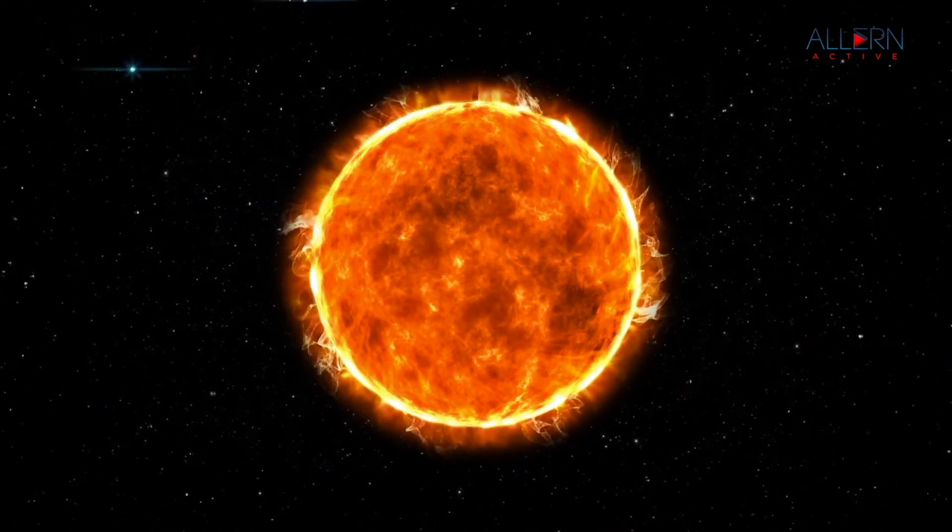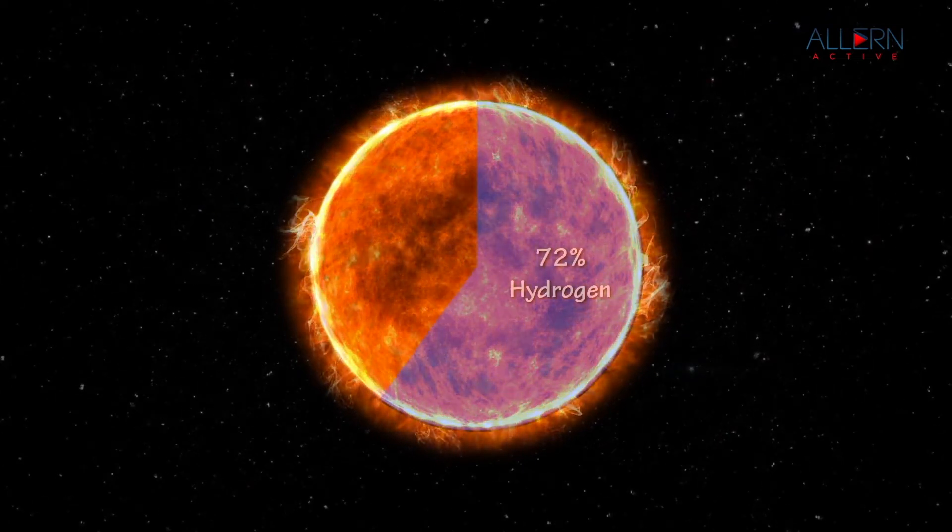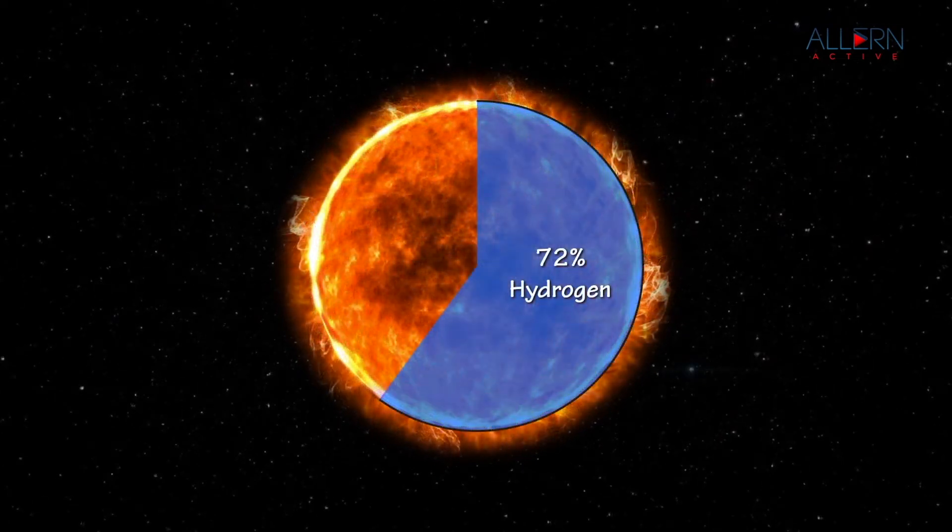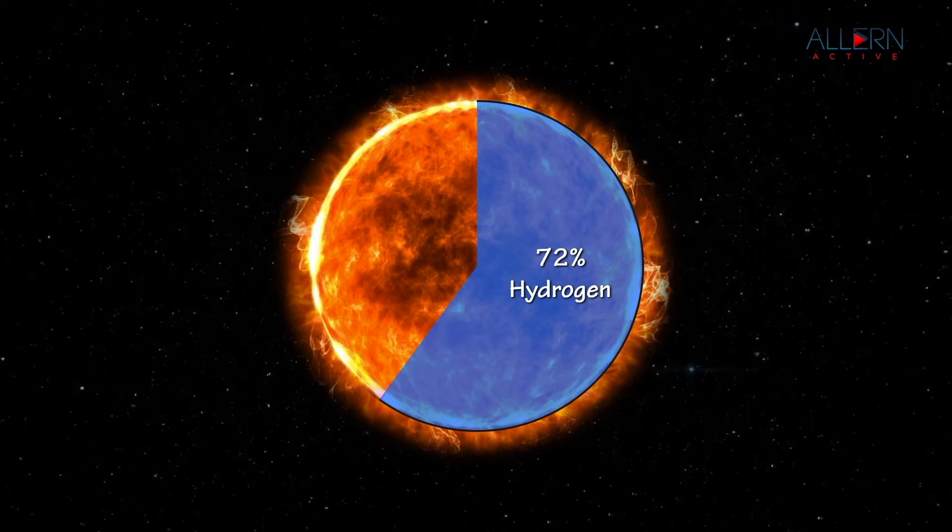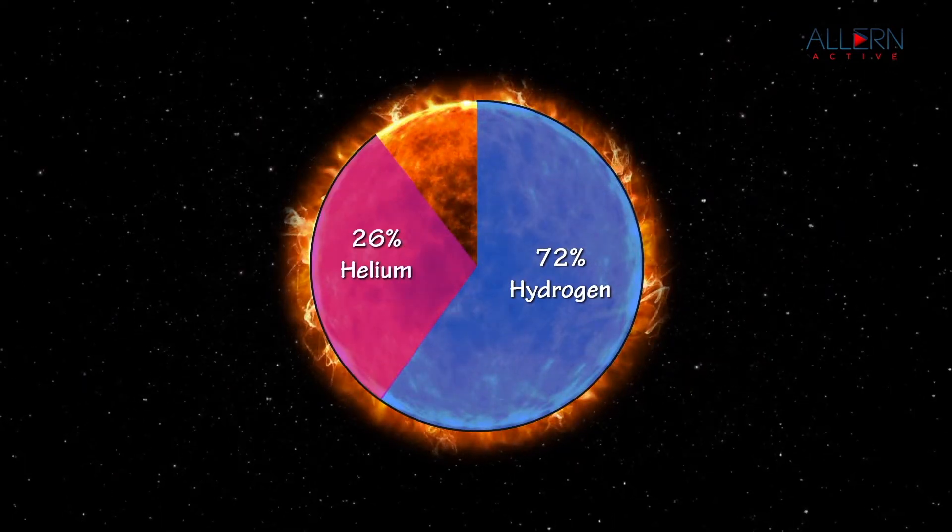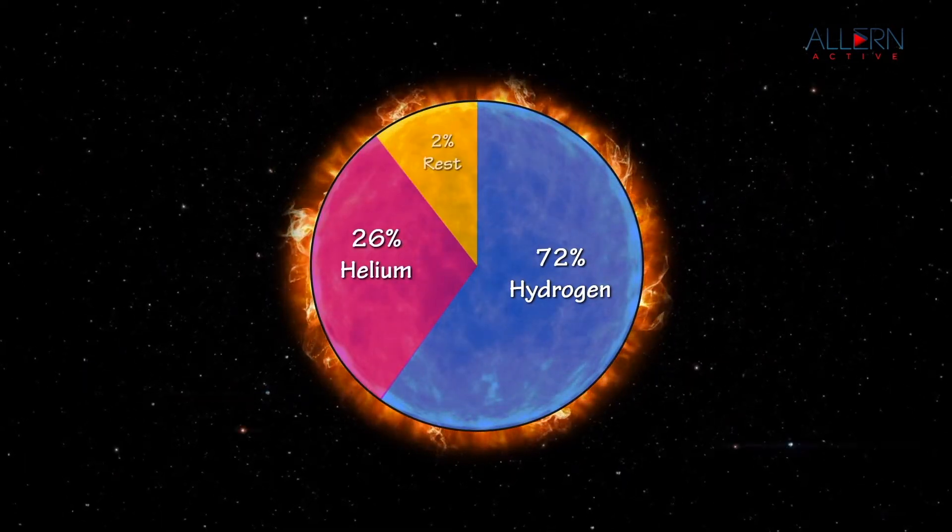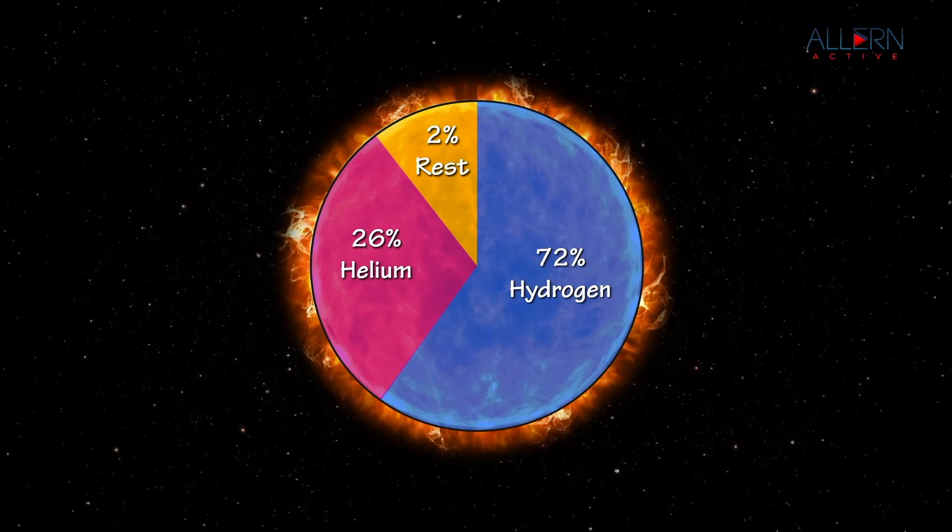Stars are gigantic spheres of hot gas. Hydrogen makes up 72% of the mass of the Sun while Helium is 26%. The rest 2% is made up of elements heavier than Helium.